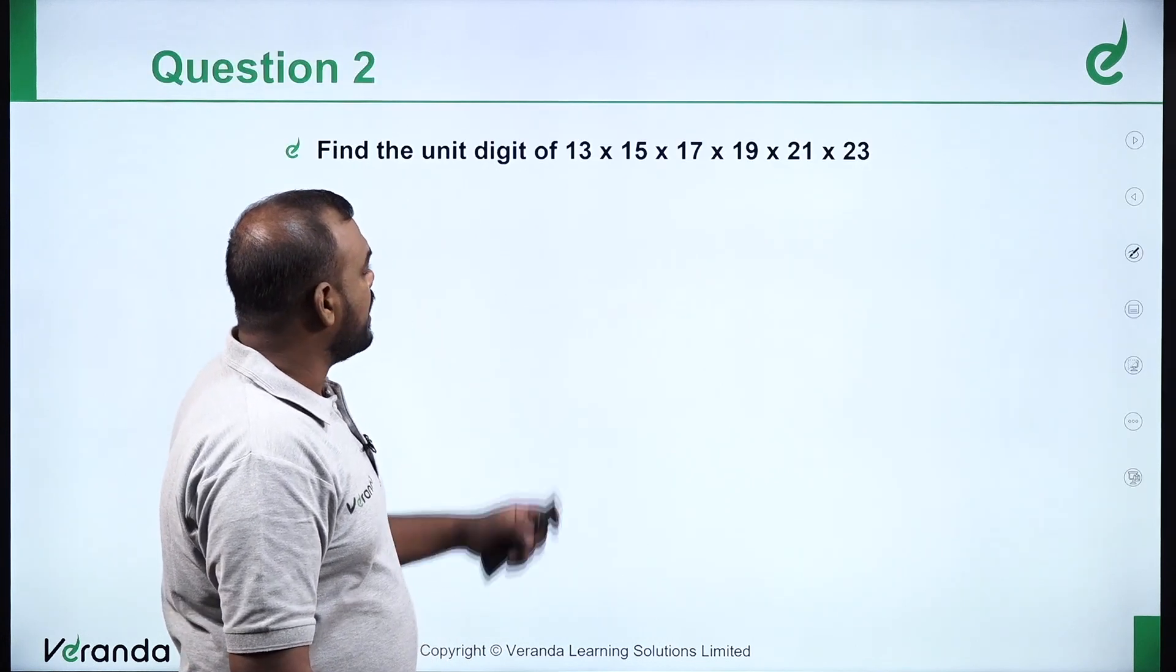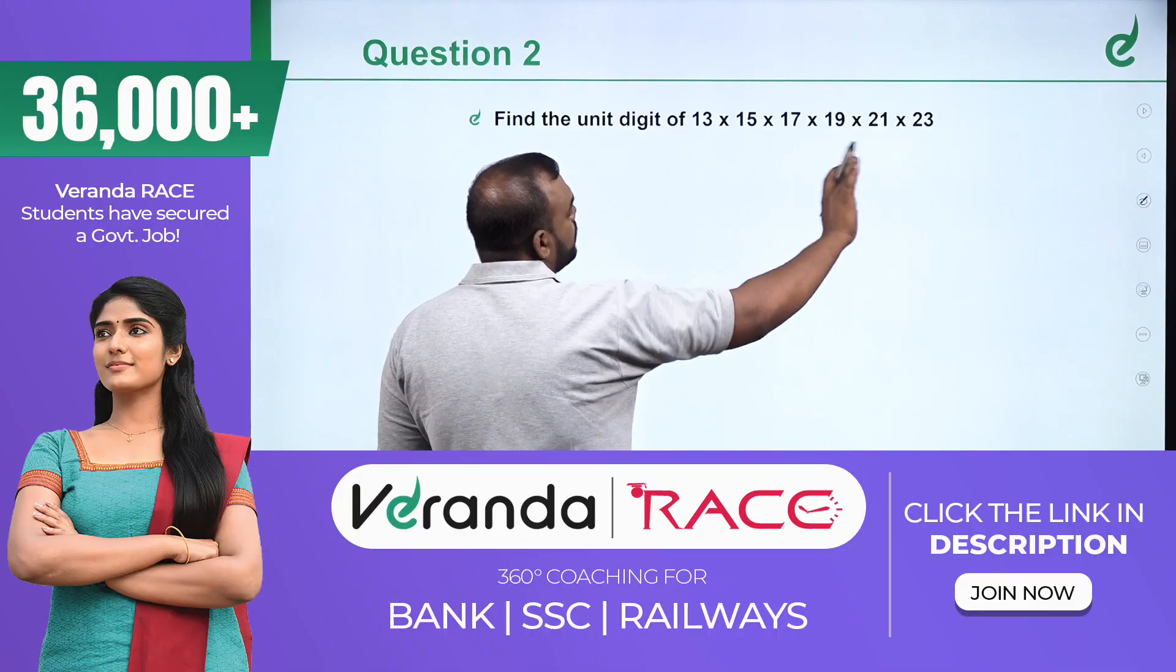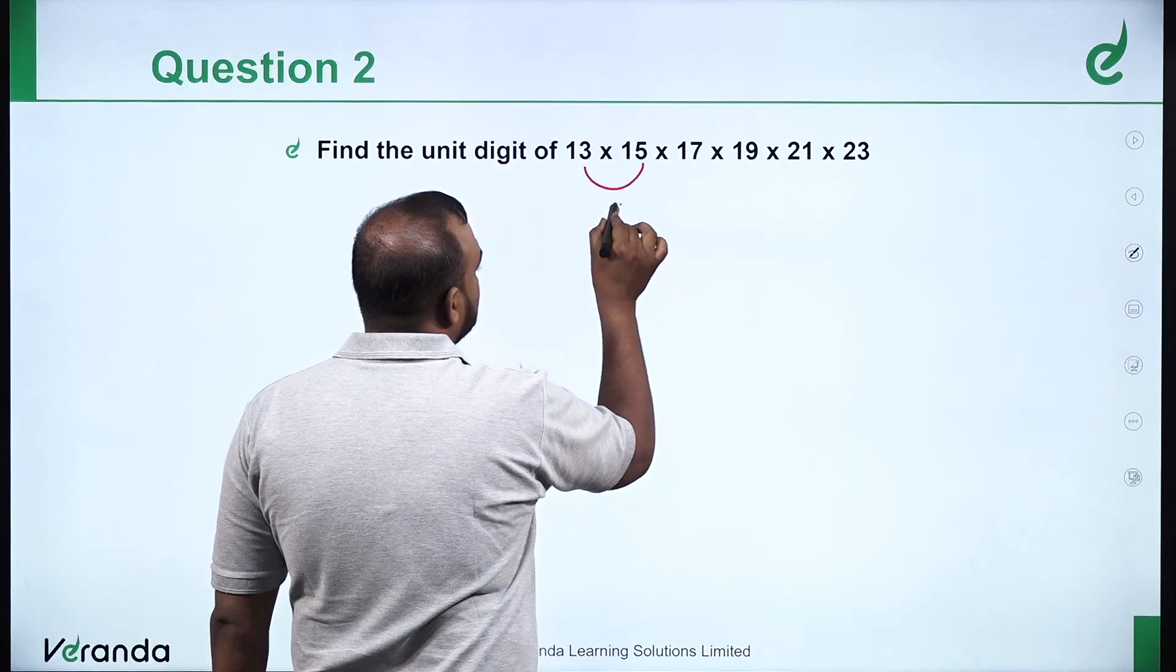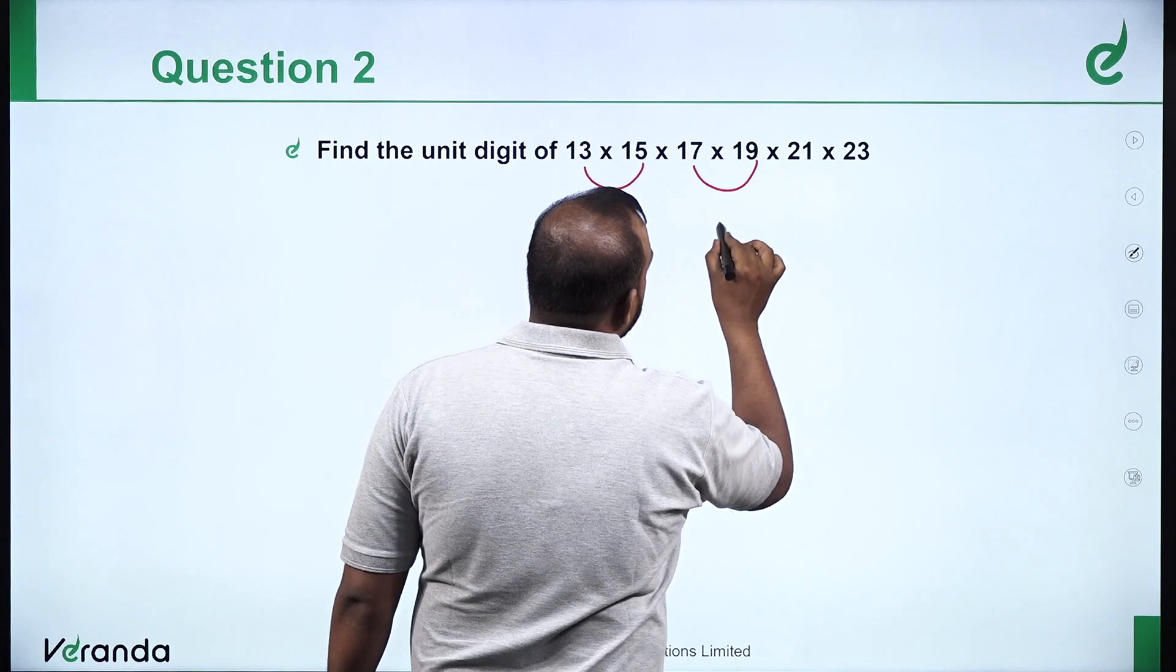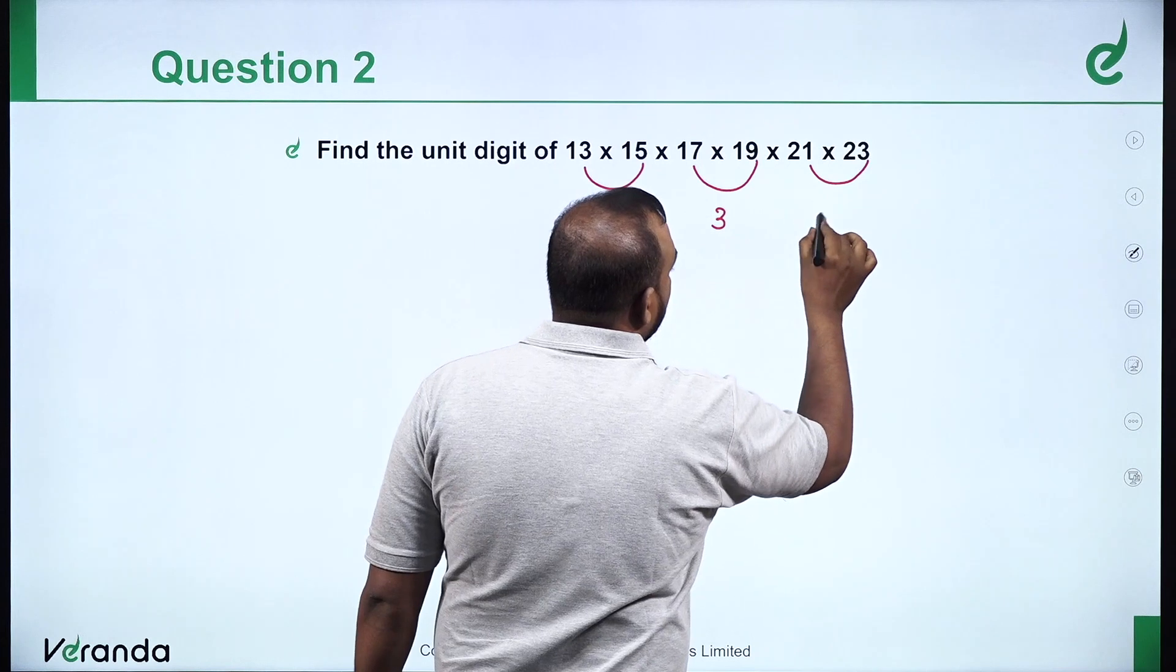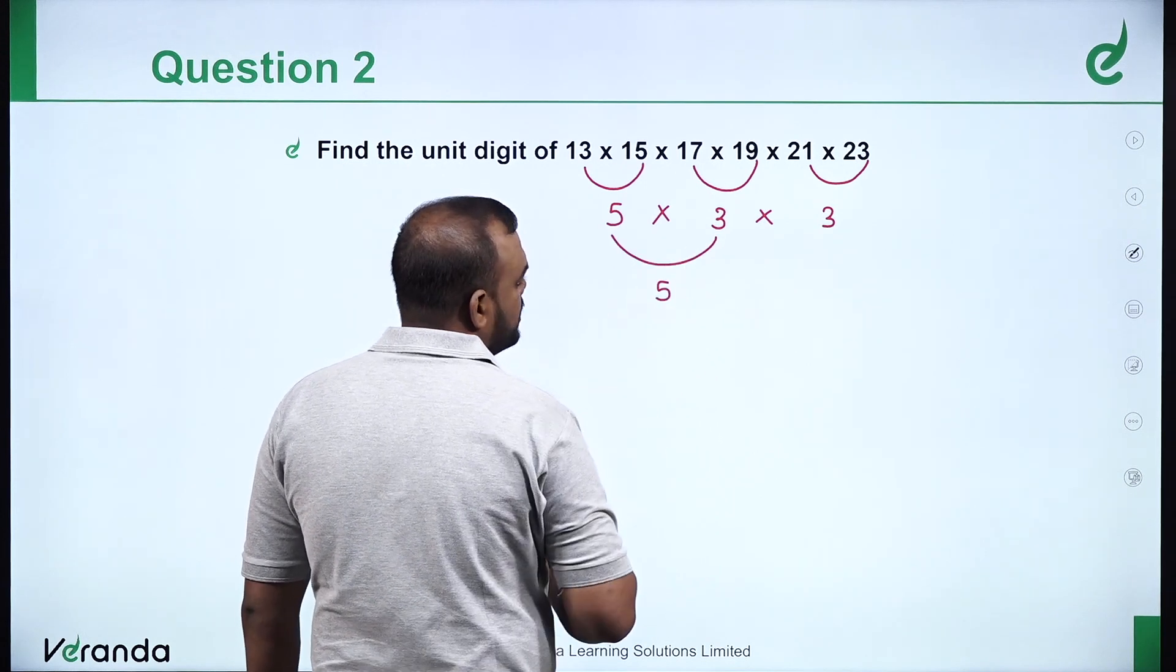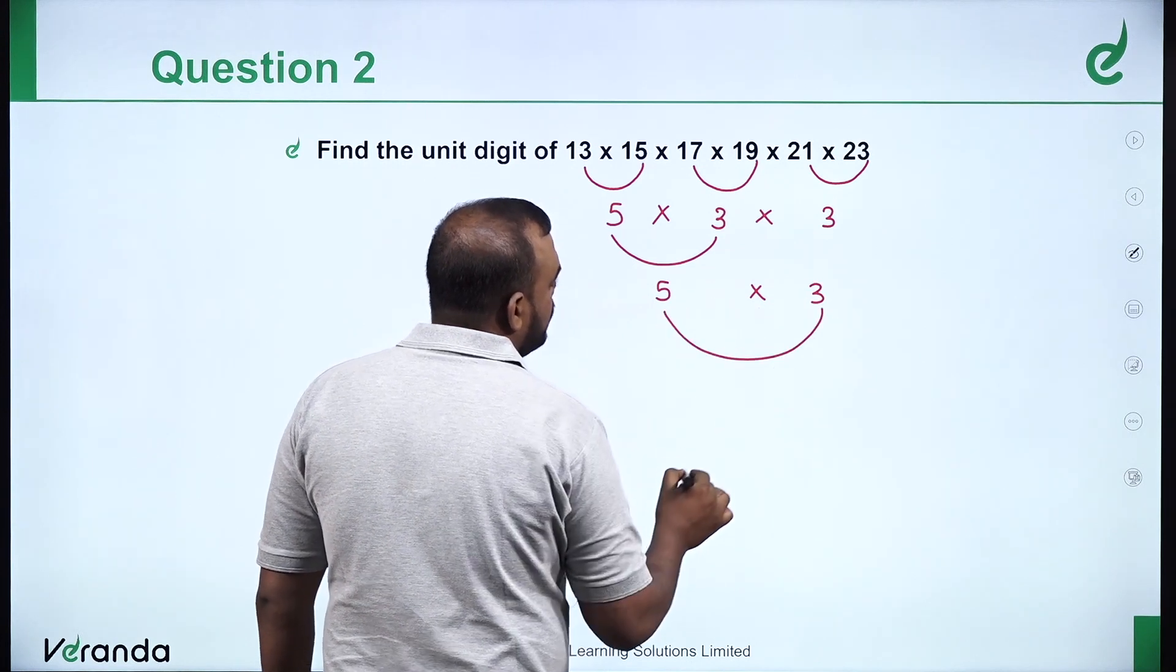Find the unit digit of this number - 6 numbers. The answer is 5. This is the second one. 3 into 5 unit digit is 15, which is 5. Here, 7 into 9 is 63, unit digit is 3. And 1 into 3 unit digit is 3. When you multiply them, 5 into 3 is 15. Unit digit is 5. Think about this - 5 into 3, the unit digit is 5.